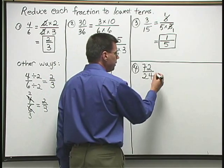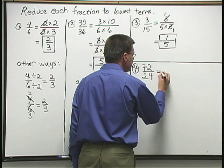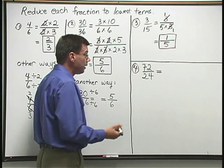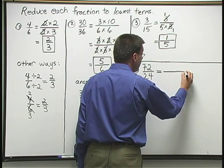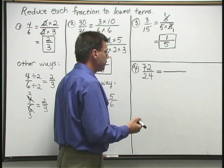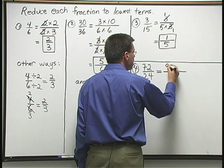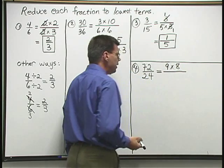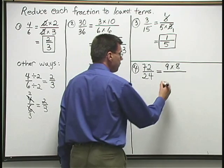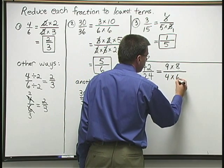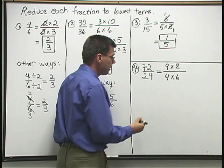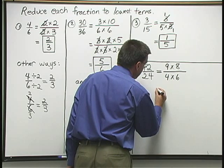Now let's look at one more here, number 4. 72 over 24. Let's go ahead and start breaking these numbers down using multiplication above and below. 72, I know from my times tables, that's 9 times 8. 24, a lot of ways to break that down, but one way is 4 times 6. I don't see the same number above and below, so I keep going. I keep breaking down the numbers that I have above and below.